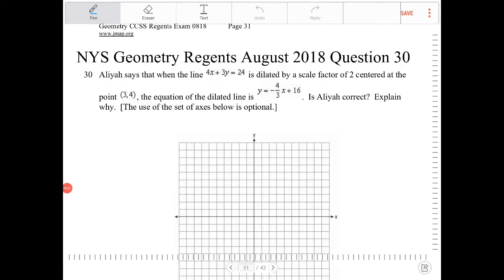Aliyah says that when the line 4x plus 3y equals 24 is dilated by a scale factor of 2 centered at (3,4), the equation of the dilated line is y equals negative 4 thirds x plus 16. Is Aliyah correct? Explain why. The use of the set of axes below is optional.